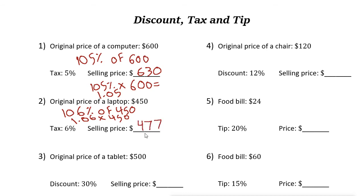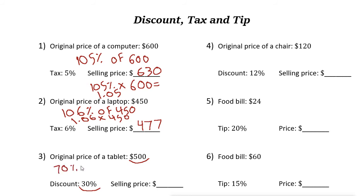One point zero six times four fifty gives four hundred seventy seven dollars as the selling price. Simply put, six percent of four hundred fifty dollars is twenty seven dollars, and twenty seven plus four fifty is four hundred seventy seven. Now this problem is about discount. The price is five hundred and the discount is thirty percent, so you need to pay seventy percent of that price.